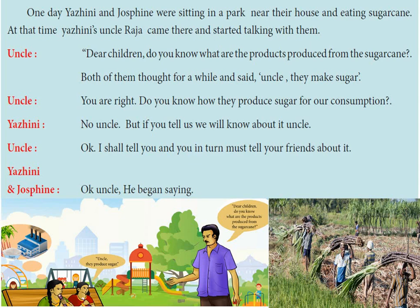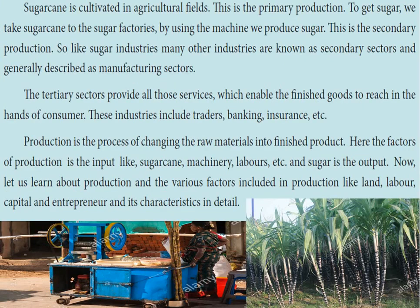Her uncle replied, 'Okay, I shall tell you and you in turn must tell your friends about it.' He began saying that sugar cane is cultivated in agriculture fields — that is the primary production. To get sugar, we take sugar cane to the sugar factories, and by using the machine, we produce sugar. This is secondary production.